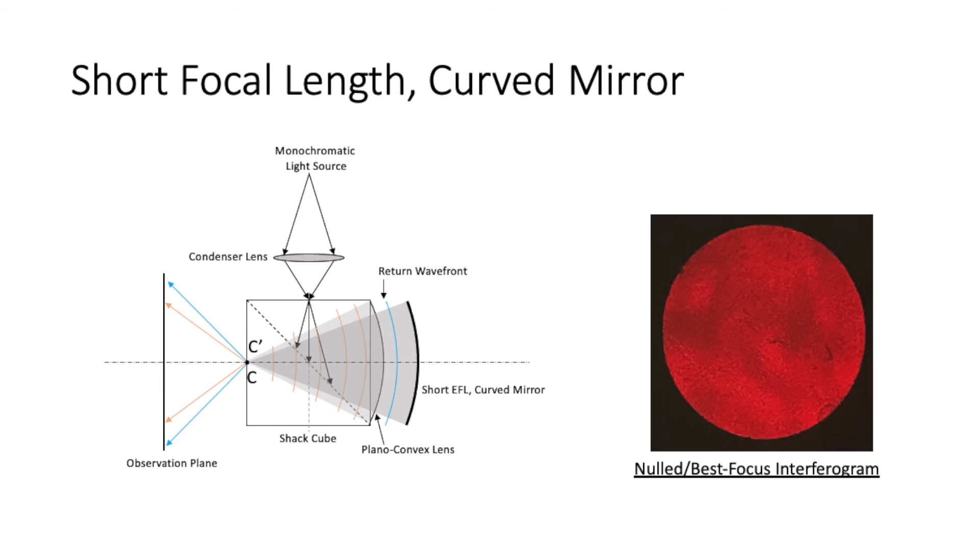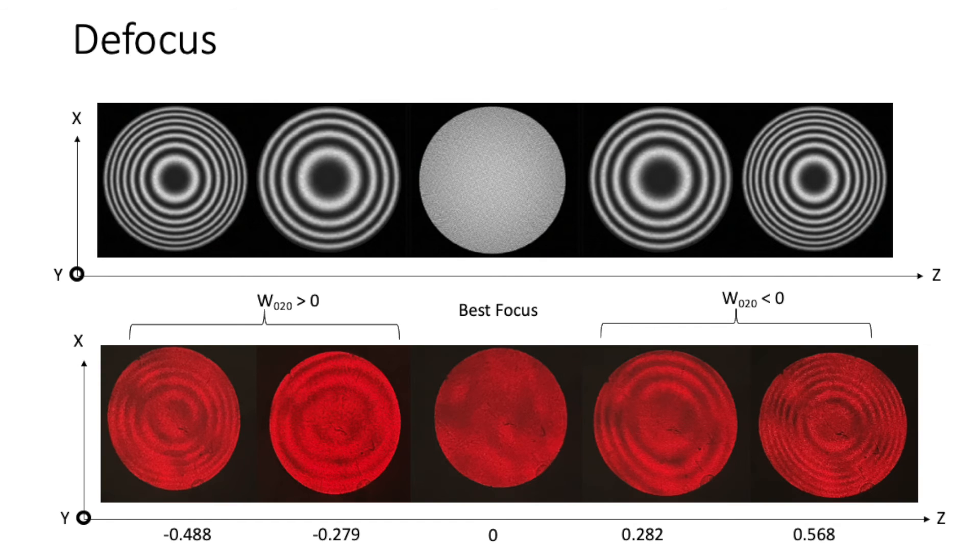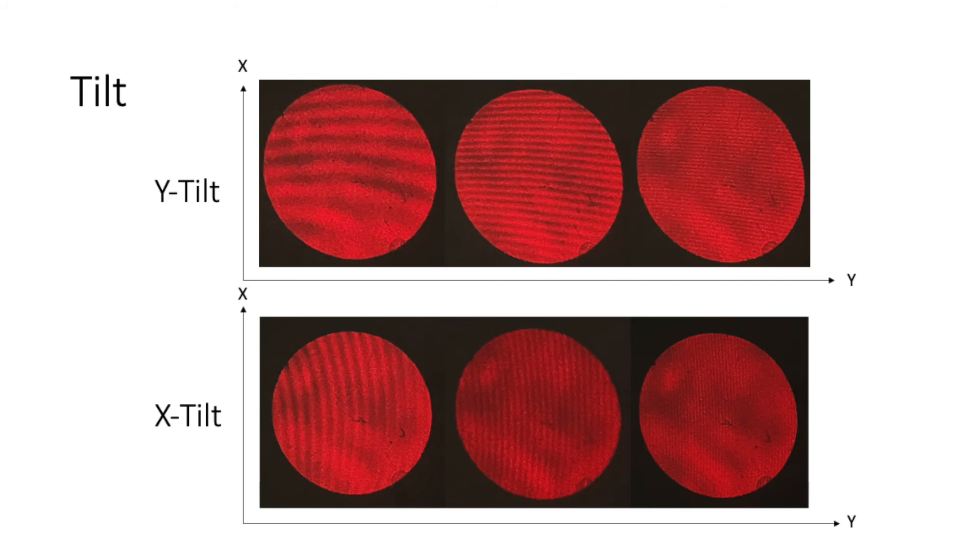In the next part, I repeated the same procedures with a short focal length curved mirror, whose nulled interferogram is shown here. Random waves in the fringes are due to local surface error in the mirror. Overall, the defocus indicates a weak presence, if any, of residual tilt. The fringes I observed for the y-tilt and x-tilt are generally what I expected to see.